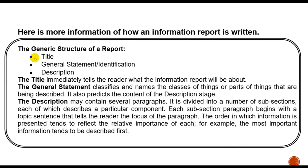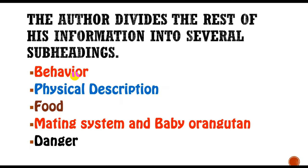So, here is the structure or the generic structure of a report: you have the title, and then you have the general statement or the identification, and also you have the description. In the text that we have just read, the author divides the rest of his information into several subheadings — behavior, physical description, food, mating system and baby orangutan, and danger. But you can make it like physical description first or food first — it's up to you.